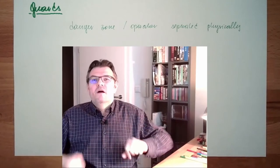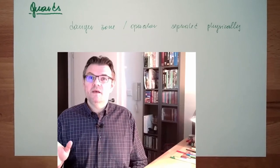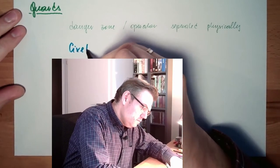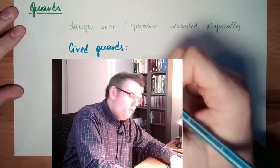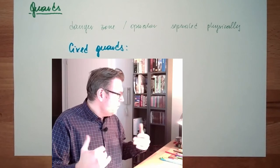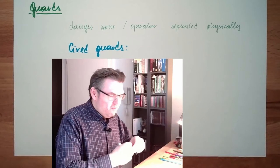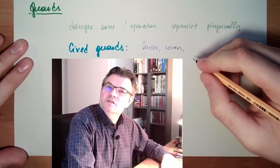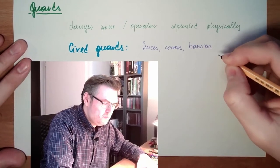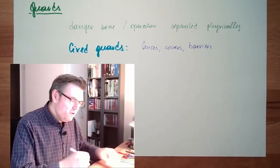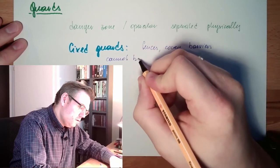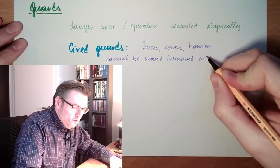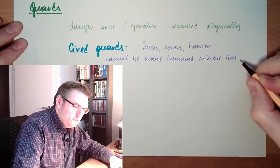Basically, there are two types of guards. One, which is, let's say, always protecting, is the non-movable or fixed guard. So there are fixed guards. Those are mounted. I can only get them loose with a tool. These are, for instance, fences, covers, other physical barriers. Fixed guards cannot be removed, cannot be moved without tool.